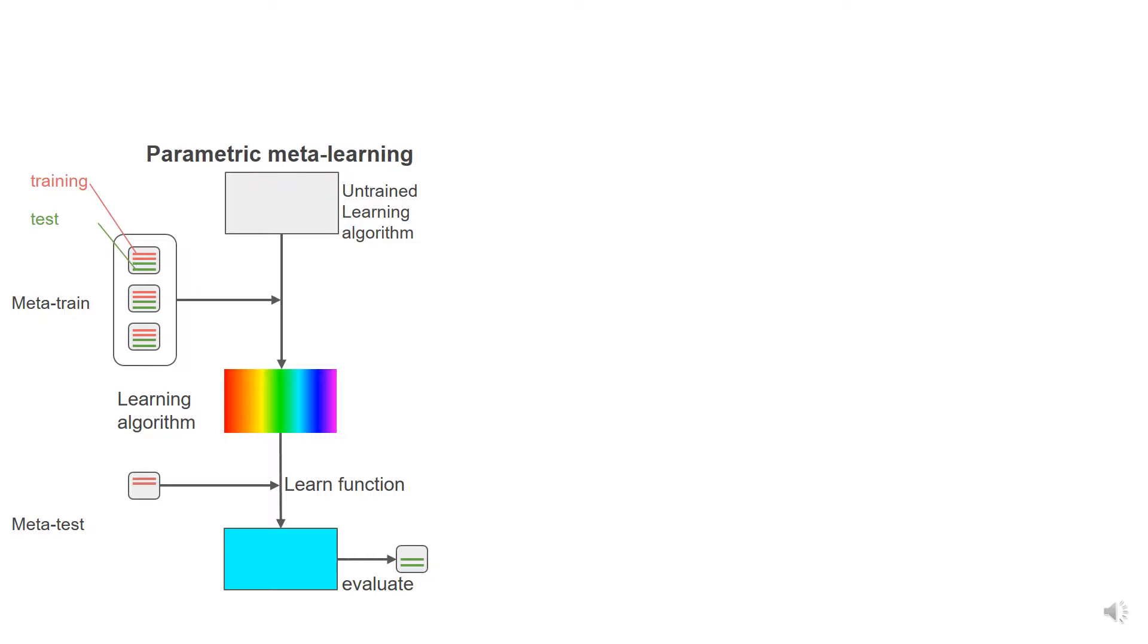A common approach to meta-learning, which we refer as parametric meta-learning, assumes the learning algorithm is a neural network, and trains its weights so that the network can quickly adapt to any task. At meta-test time, given the training data, we tailor the network weights to the particular dataset.